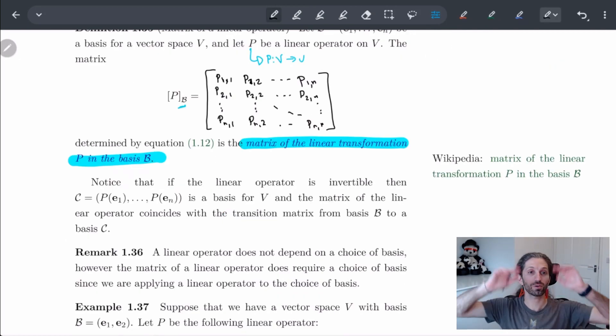And notice that if this matrix is invertible, then P is basically also defining a transition matrix to some new basis C. So if I take P of each of the individual basis vectors, this is going to give me a new basis, as long as it's invertible. So this linear operator is going to define both a matrix for the linear transformation, but also will be the transition matrix for two bases.